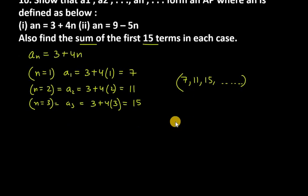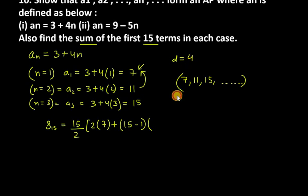Now what do you need to do? Sum of first 15 terms, S15. So S15 what will be? 15 over 2 into 2 into A. A is 7, first term is 7, plus n minus 1, it is 15 minus 1, times D. D is what here? 11 minus 7, 11 minus 7 is 4.